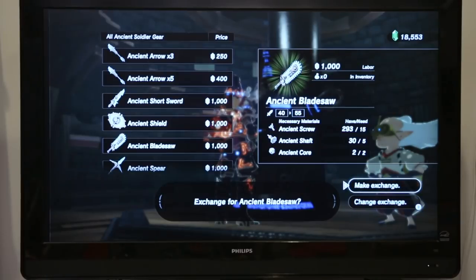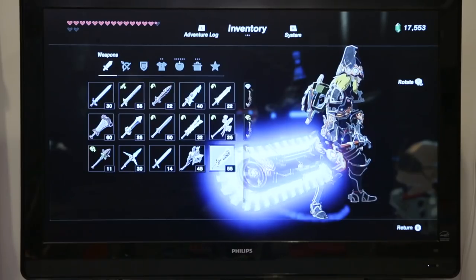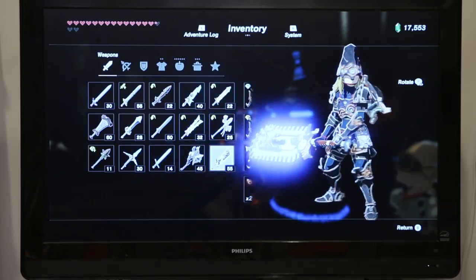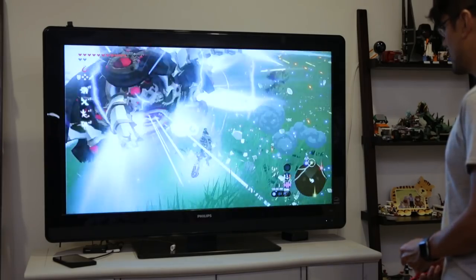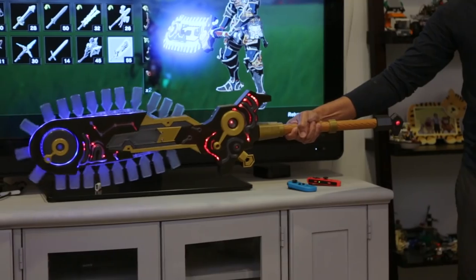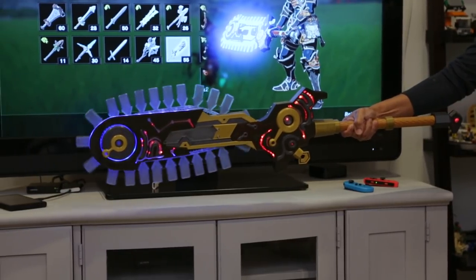The Ancient Blade Saw is a pretty cool weapon that looks like a chainsaw. In the game, Link has it forged from the tech lab. It's a pretty fun weapon that can take down guardians by just swinging it around. We wanted to make this blade saw look and feel like it was straight out of the game.